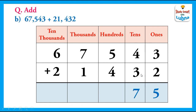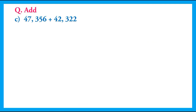We will add the digits in the hundreds column: 5 plus 4 equals 9. Now we add the digits in the thousands column: 7 plus 1 equals 8. In the end we add the ten-thousands column: 6 and 2, so 6 plus 2 equals 8. After adding them we have got 88,975.